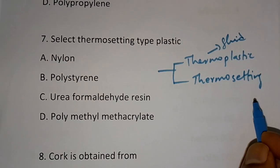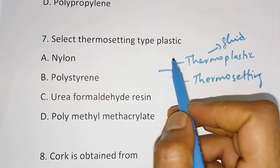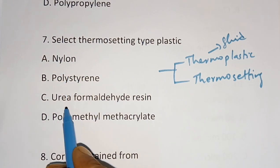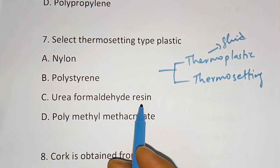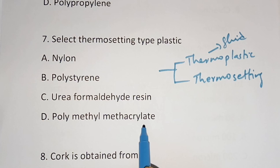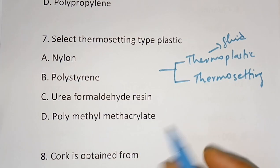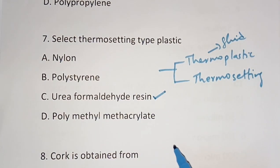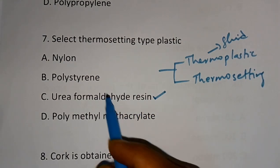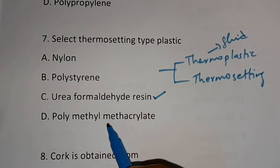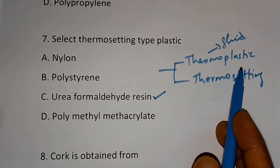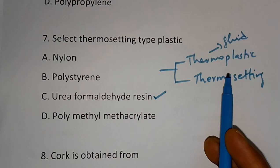What is an example of thermosetting type plastic? Options are nylon, polystyrene, urea formaldehyde resin, and polymethyl methacrylate. The correct answer is urea formaldehyde resin. Nylon, polystyrene, and polymethyl methacrylate are thermoplastic types.